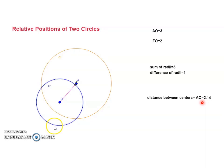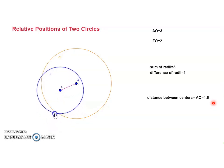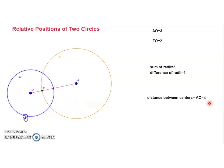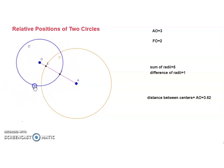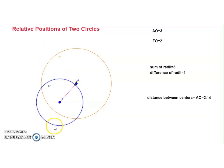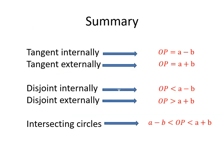We know that the distance between the centers is between the difference and the sum of the two radii. In this simulation, this value is always between 1 and 5. No matter how we move the circle, this value always stays between 1 and 5.